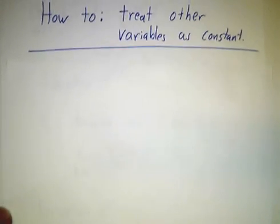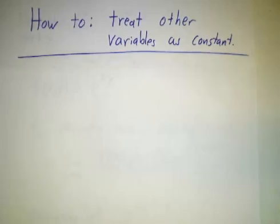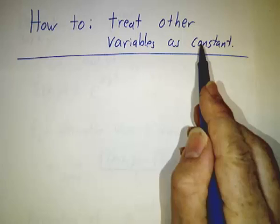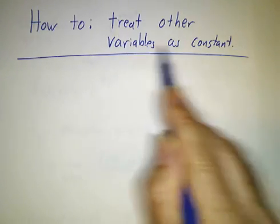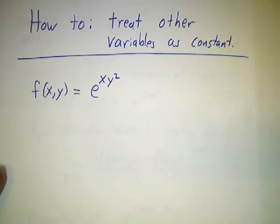Now, you might ask, how do we compute partial derivatives? We've got a whole bunch of formulas for computing regular derivatives. And the answer is, we're going to treat the other variable as a constant. If I give you a function of x and y and ask, what's the partial derivative with respect to x? We're going to treat y as a constant because it is a constant, because we're holding it fixed.